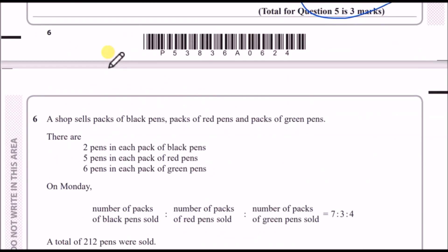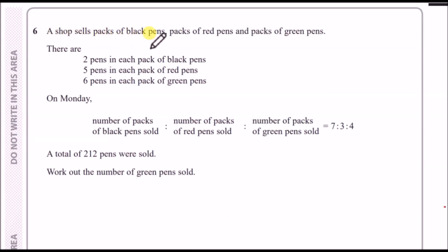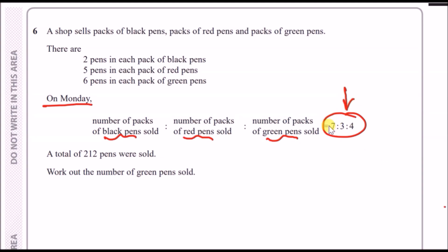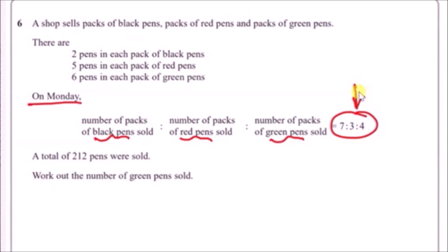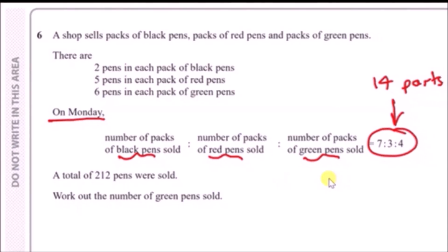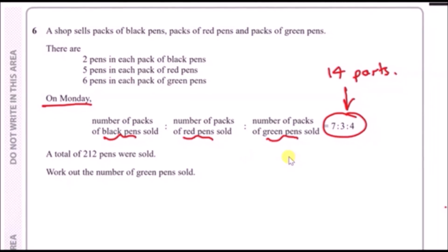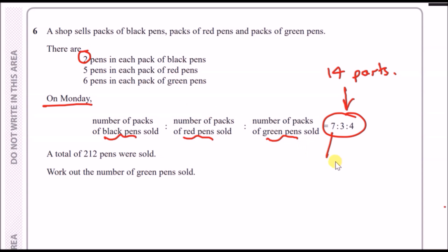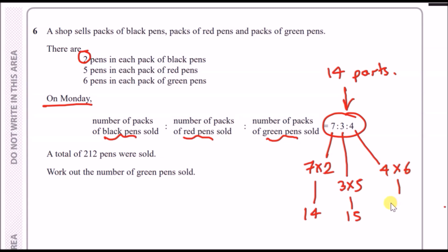Number six: a shop sells packs of black, red, and green pens — 2 pens per black pack, 5 per red pack, and 6 per green pack. On Monday, packs sold were in the ratio 7:3:4. Multiply packs by pens per pack: 7 × 2 = 14 black pens, 3 × 5 = 15 red pens, 4 × 6 = 24 green pens, giving 53 total parts.